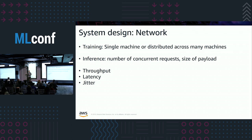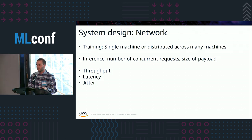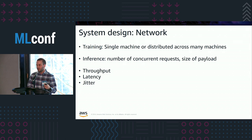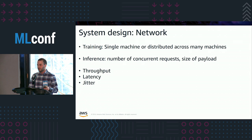When you include the network, you think about parallelizing the operation across many machines. In the training context, moving to distributed, there's a computation-communication trade-off to evaluate. Moving to inference, you think about vertically or horizontally scaling your load based on model complexity, number of concurrent requests, and payload size. Suggested metrics for measuring the network include throughput, latency, and jitter.